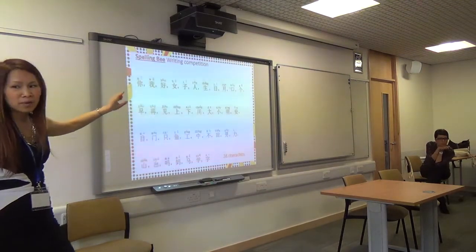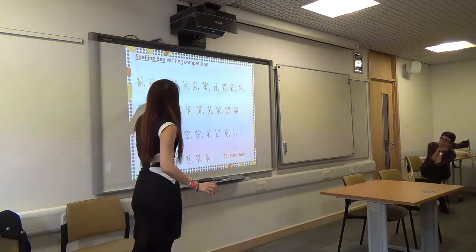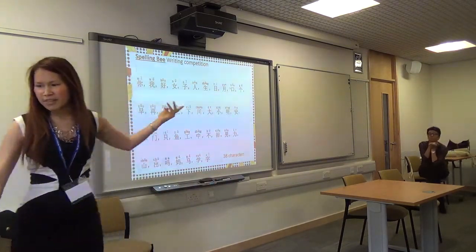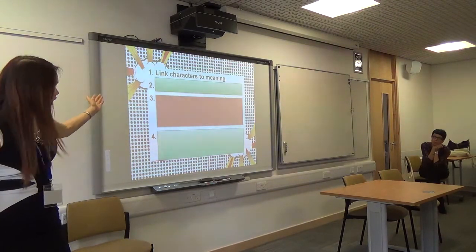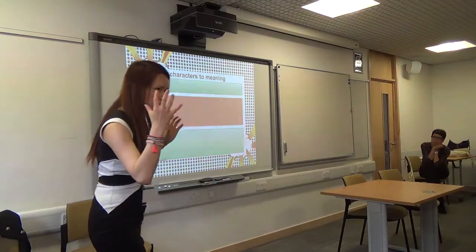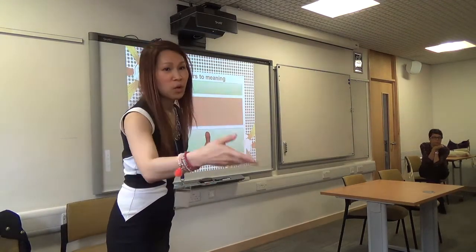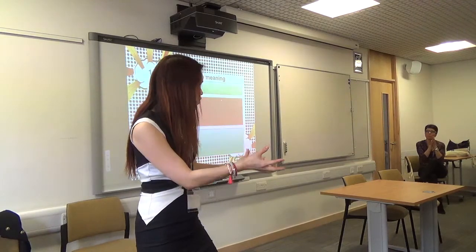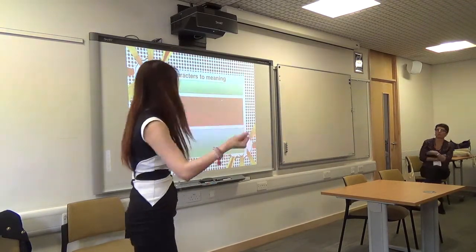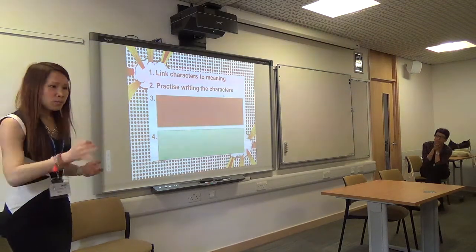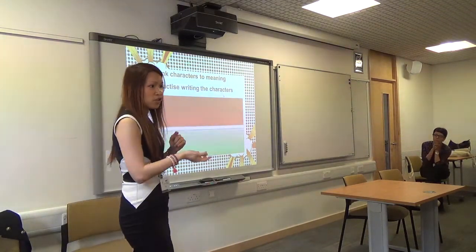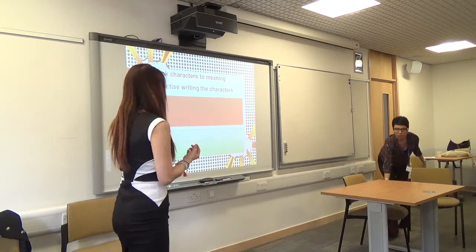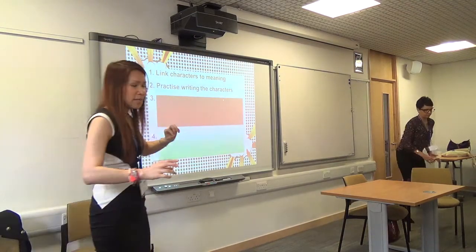I link the characters with their meaning. For example, 'I,' and 'woman with a child means good' — so we have woman, we have child. Once you link the characters with the meaning, you can even ask students to explain. We ask them to look at the character and explain what it looks like — like 'person' looks like two legs. After that, we practice writing the characters. By this time, they should know the stroke order, because that's how they can actually remember to write the characters.